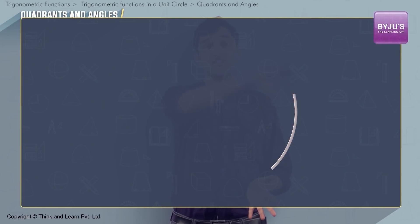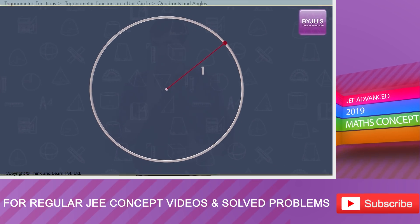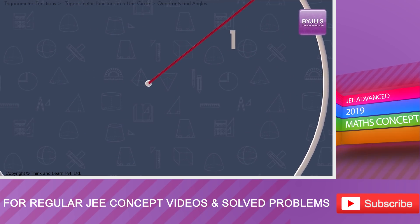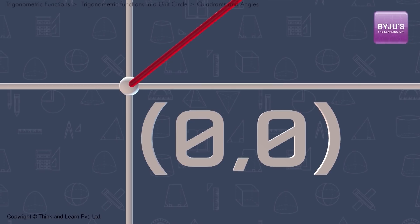Consider a circle with radius 1 unit. We call these kind of circles as unit circles. Let the center of the circle be at the coordinate (0,0), that is x value is 0 and y value is also 0.